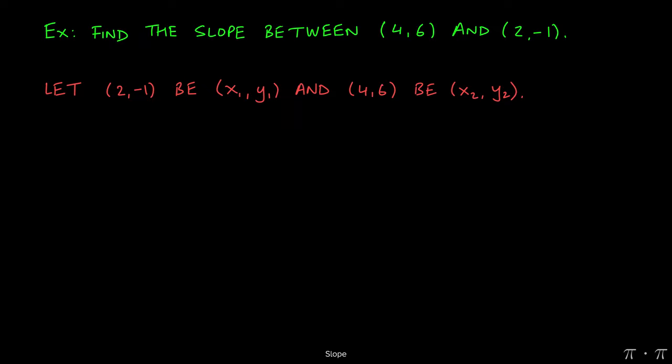And then, naturally, 4 comma 6 becomes the second point, x2 comma y2.